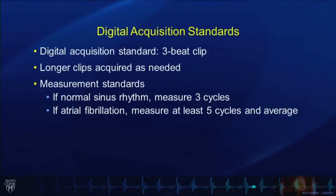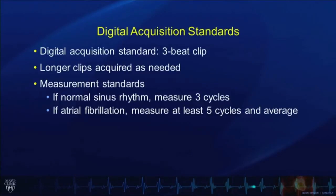The measurement standard should be: if a patient is in normal sinus rhythm, we should measure three cycles and average them. If a patient is in atrial fibrillation or an irregular rhythm, measure at least five cycles and average those measurements.